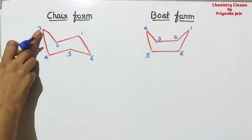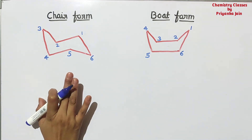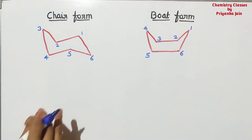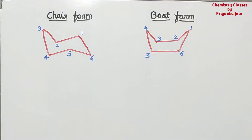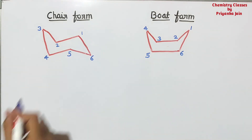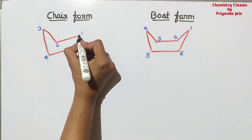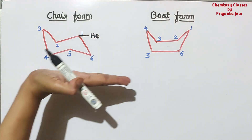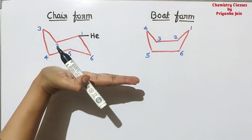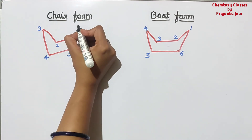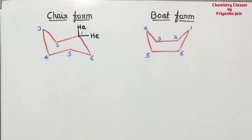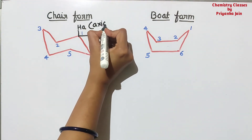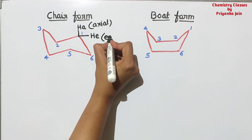At each carbon atom, two hydrogens are attached. There are two types of hydrogens — this thing you should learn very strongly. One is called the equatorial hydrogen, meaning the hydrogen present in this manner, in the plane of the molecule. Another hydrogen is present perpendicular to the plane of the molecule — this is called the axial hydrogen. And this other one is called the equatorial hydrogen.